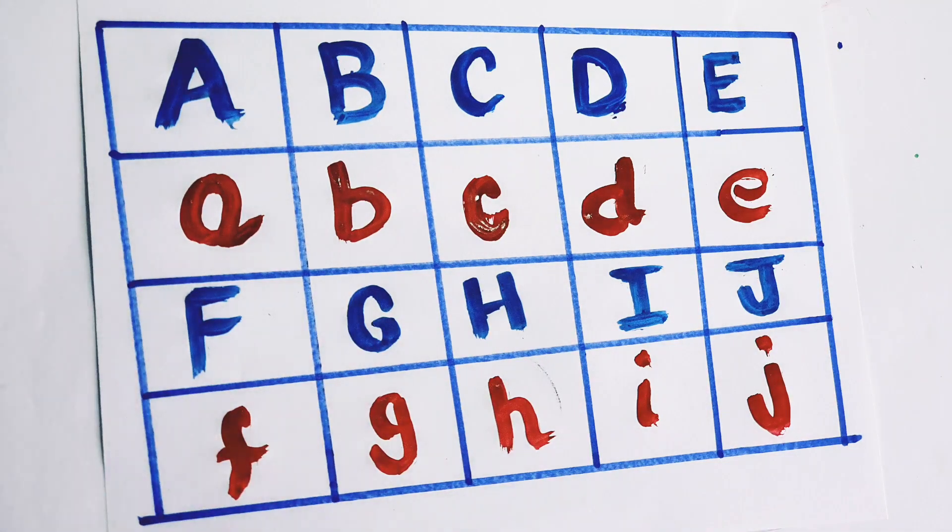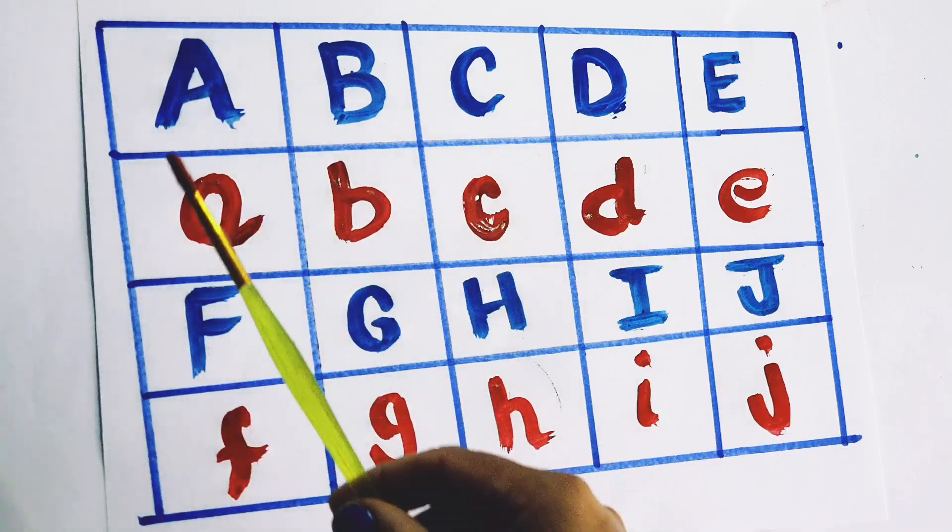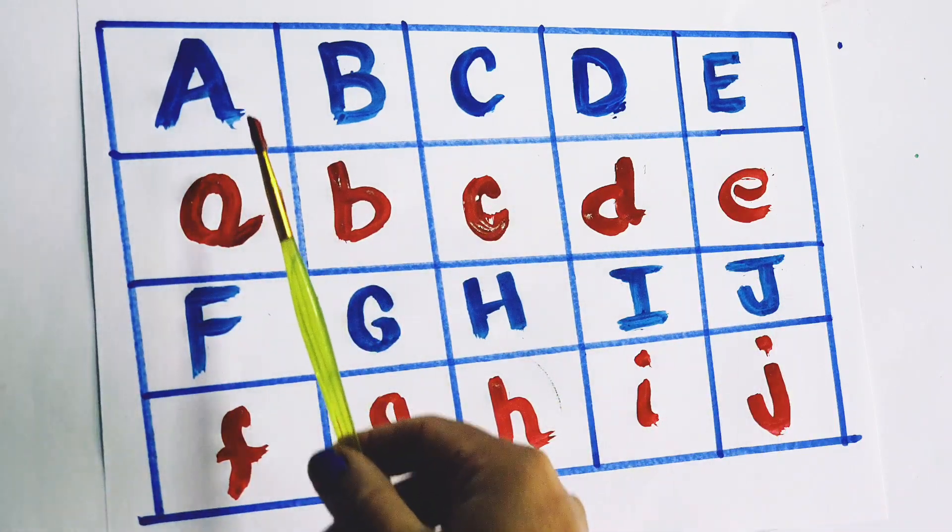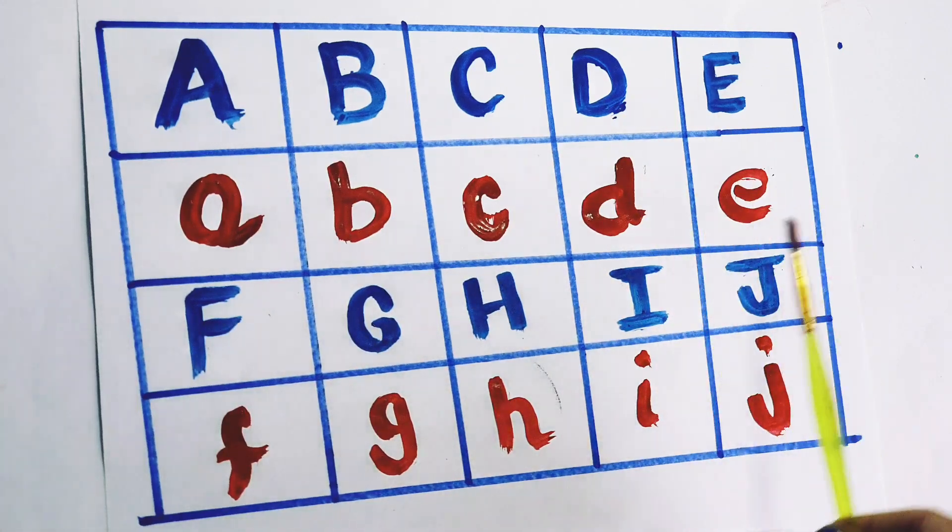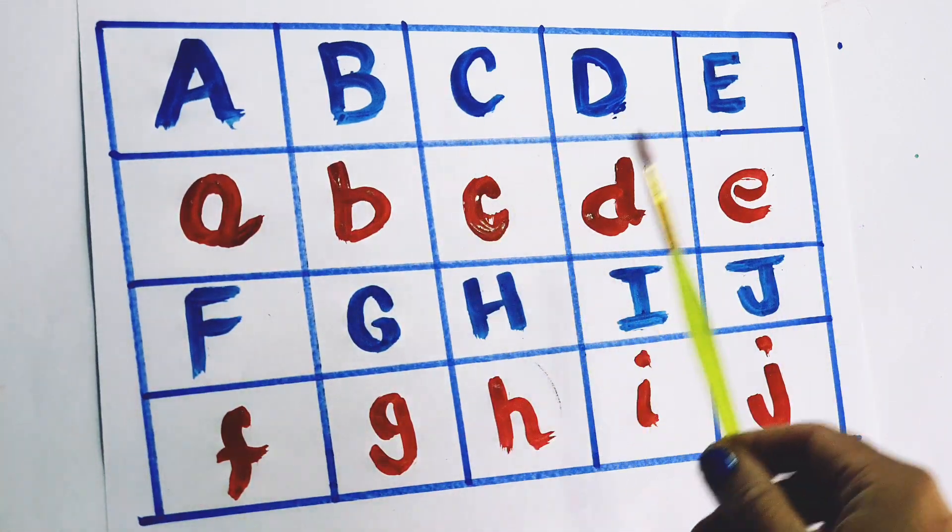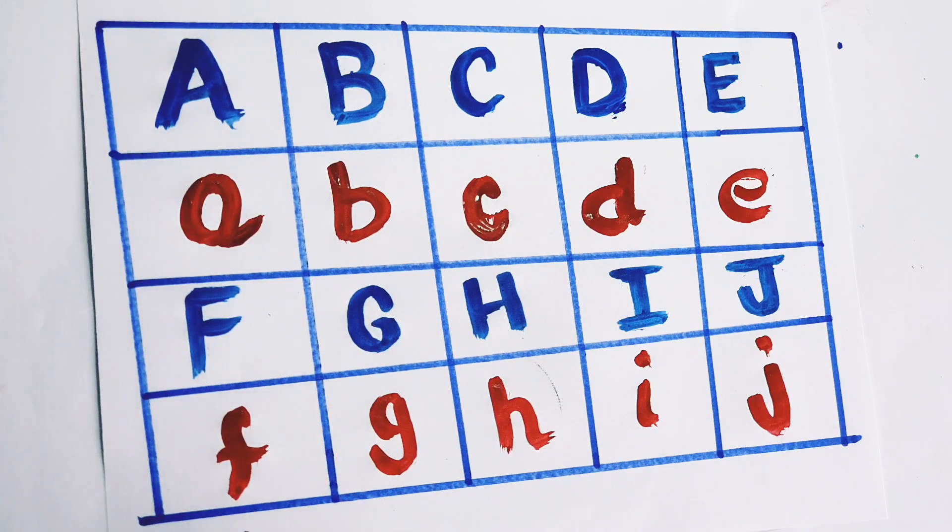So kids, what we learn today? We learn about blue color and red color. A, B, C, D, E, F, G, H, I, J.